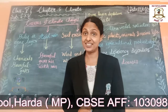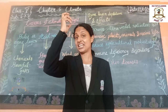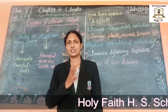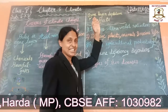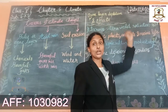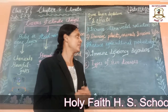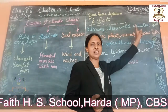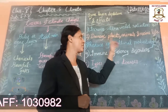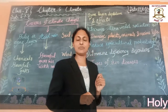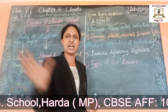When holes form in the ozone layer, ultraviolet rays from the sun come directly down to the earth. This causes increased ultraviolet radiation, which damages plants, animals, and marine life. It is very dangerous and very powerful.